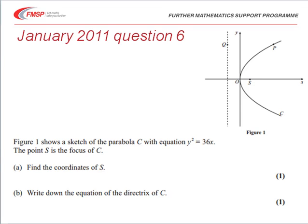The question starts by showing us a sketch of a parabola with equation y squared equals 36x, and S is the focus of the parabola. We're asked first of all to find the coordinates of S and then to write down the equation of the directrix, so the directrix is marked.